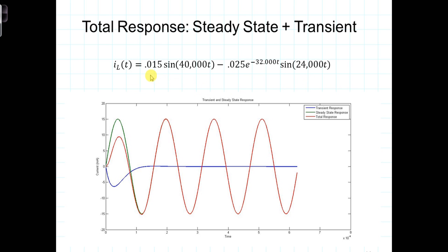We saw that the current through the inductor was equal to a sinusoidally varying component that we referred to as the steady state component, and there is also the transient component, which dies out exponentially, oscillating at a different frequency. The total response is the sum of those two.